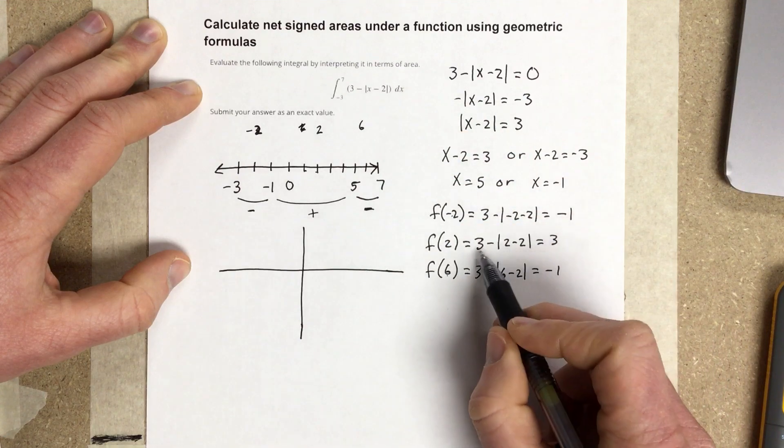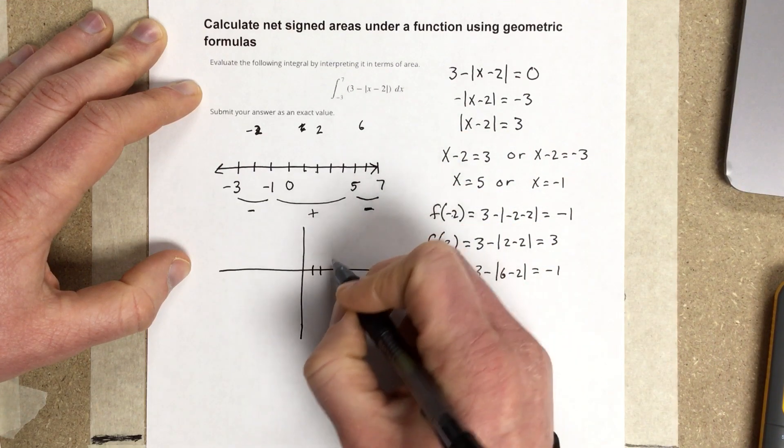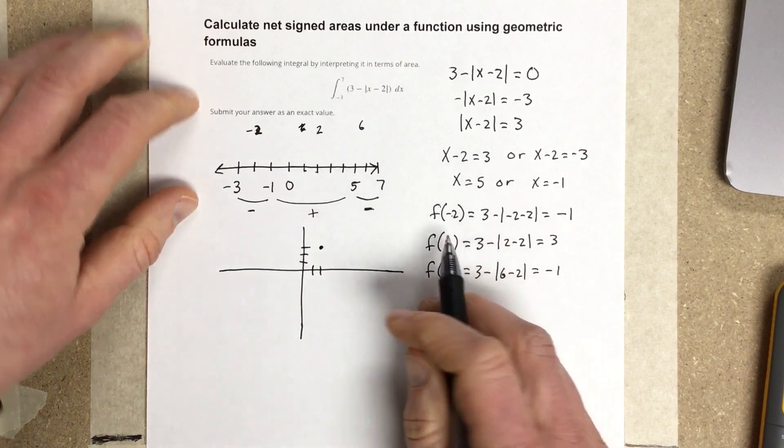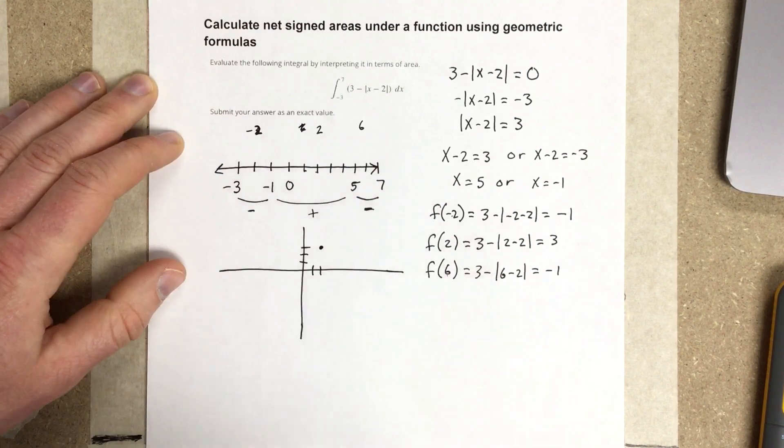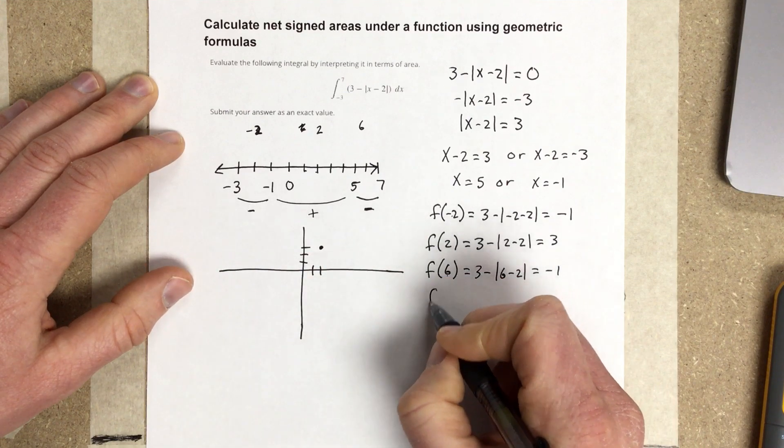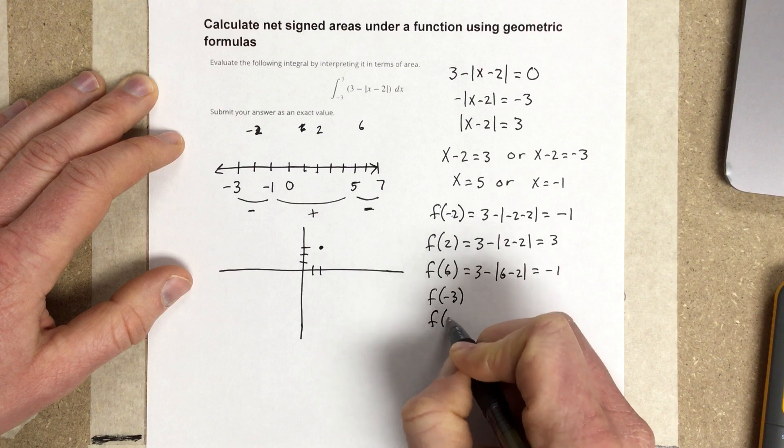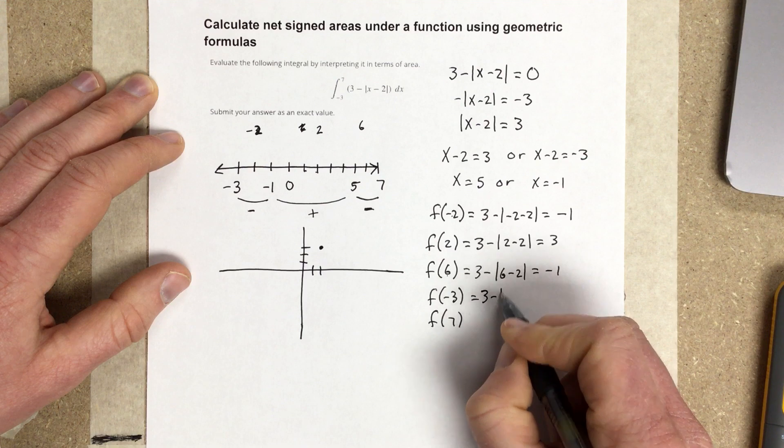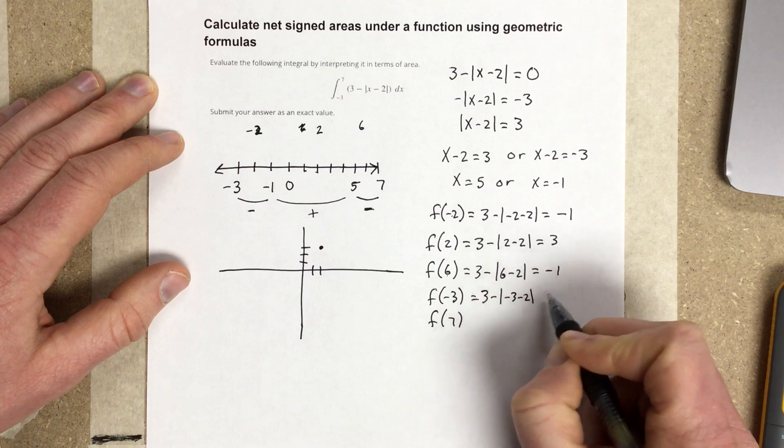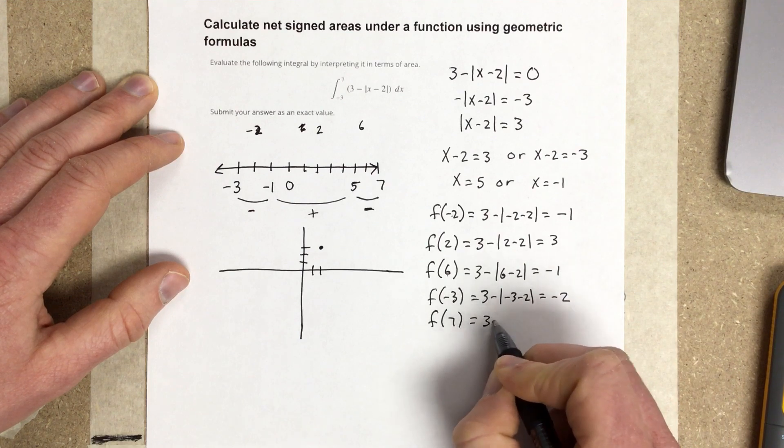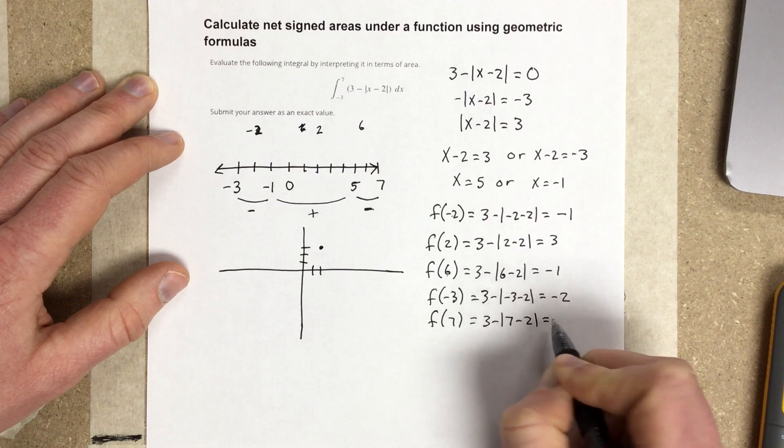So, I plug in 2, I get 3. So, that's 1, 2, 3. Let's plug in the endpoints, negative 3 and 7, to kind of get the lowest values. So, if I plug in negative 3, I plug in 7. What do I get? So, negative 3 would be 3 minus absolute value of negative 3 minus 2. This is 5, so I end up with negative 2. And then I get 3 minus 7 minus 2. So, this is 5 again, so I get, again, negative 2.